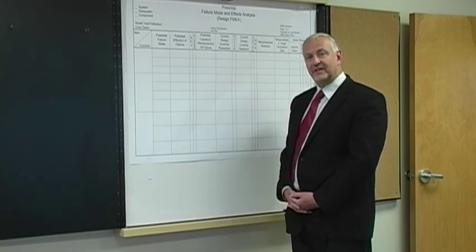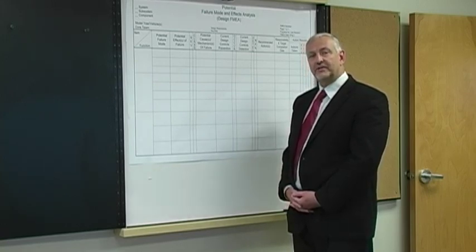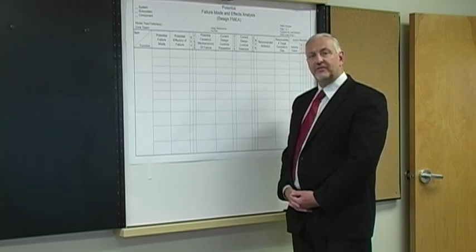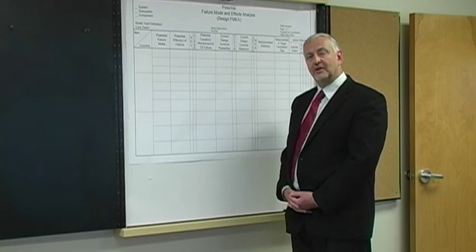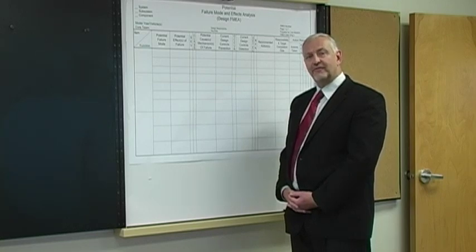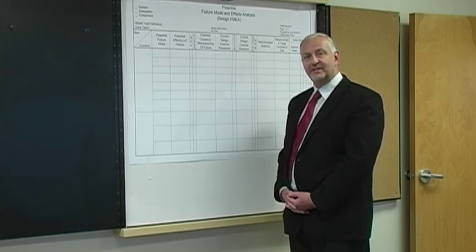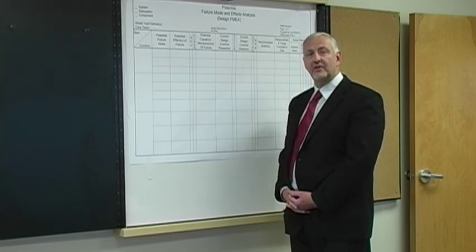The last section of the FMEA is the design controls or process controls. And this design controls column is all about what tests and methods would be available for testing for a particular failure mode or causing a particular failure mode to occur in the test itself by exciting that failure mode in its cause.